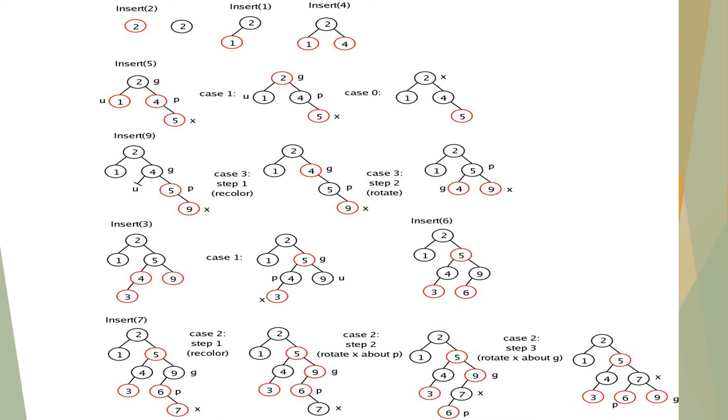Next, insert 4. As it is greater than 2, it is placed at the right side and it is newly added so it is colored with red. Insert 5 — as it is greater than 2, it is placed at the right sub-tree of 2 and colored with red because it is a newly added node. Here it violates the properties of red-black tree because no two continuous nodes should contain red color, but here 4 and 5 have the same color.